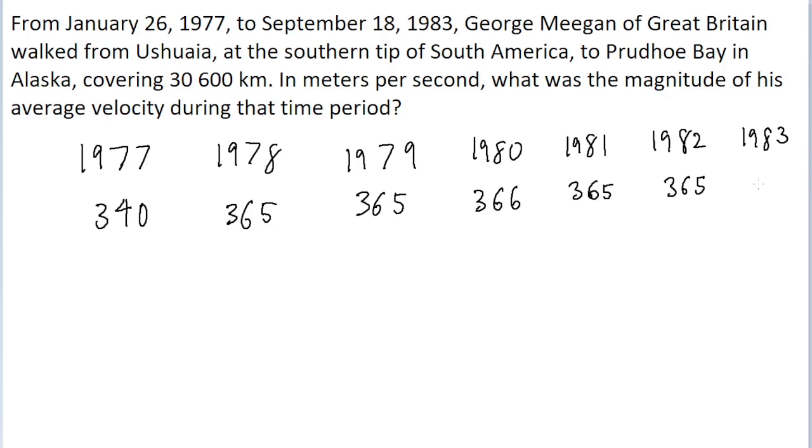And then finally, 1983, but only up to September 18th. If we add together all the days of the first eight months of a typical year, and then add the 18, the first 18 days of September, then we find that that is 261 days to account for in 1983.